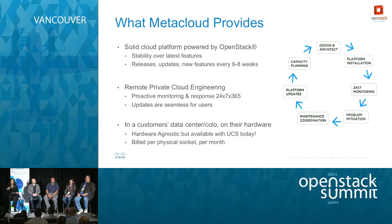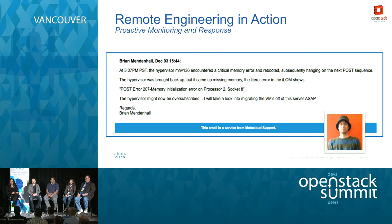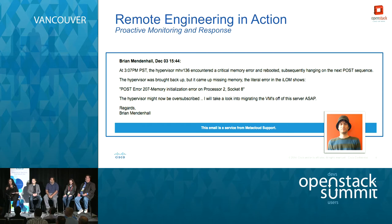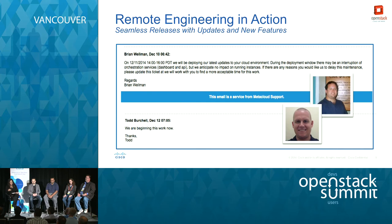The other part is what we call Advanced Operational Support — the as-a-service part. The best way to explain this is to show some of the tickets we generate. For example, a hypervisor had a critical memory error. We have about 10,000 checks happening per minute across all our customers' availability zones. We'll say your hypervisor might be oversubscribed or there's an error, and we'll go ahead and move the VMs for you. Operators love this; developers probably don't even know it happens.